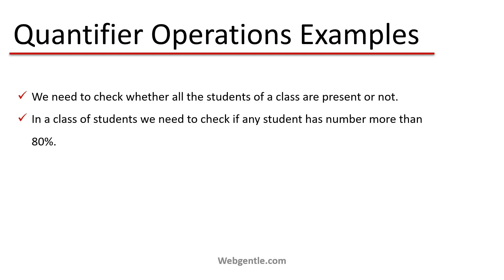If any one of them is absent, the return type will be false. The next example is: suppose in a class of students we need to check if any student has marks more than 80 percent. In this scenario we are looking for at least one element. If any one student has marks more than 80 percent, the return will be true. If no student has marks more than 80 percent, the return type will be false.